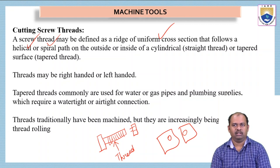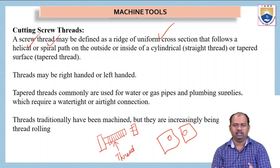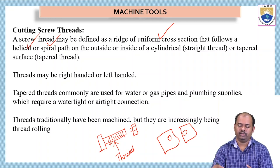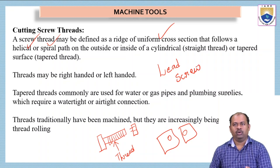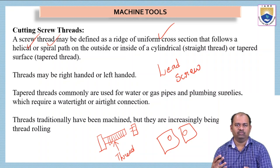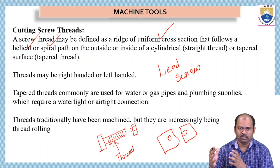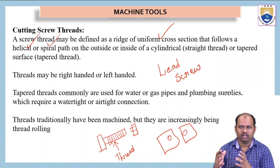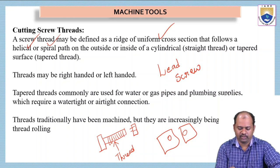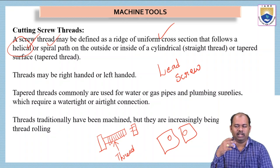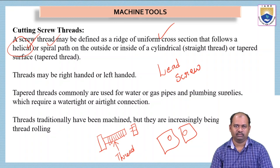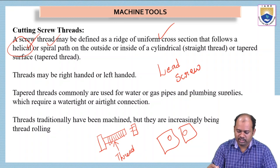This thread cutting operation can be done on a lathe machine by using an important component called the lead screw. On a lathe machine, we have this tool called the lead screw. Its function is to move the tool along the helical path. We have to cut serrations or make grooves on the cylindrical surface in a helical way — it should not be done in a straight motion, it should be done in a helical way.